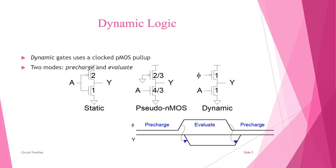Here we also have pseudo-NMOS present in this presentation. Pseudo-NMOS means: static means giving both PMOS and NMOS the same input. Here one input is given to NMOS and then the PMOS is grounded — that means it is having pseudo-NMOS. But if the PMOS is also having another input, then it is called the dynamic structure.